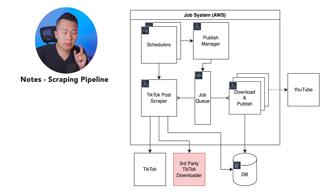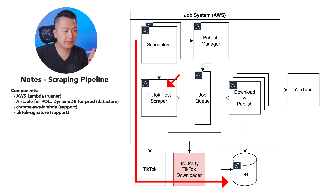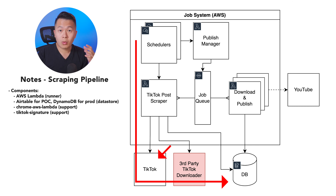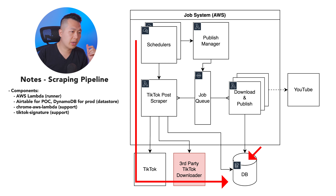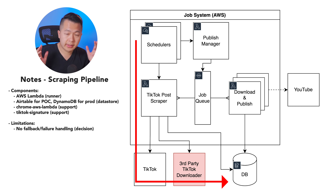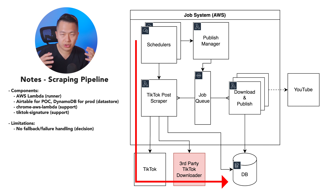Let's talk about the scraping pipeline. When the scheduler kicks off, the Lambda function starts up a headless browser, goes to TikTok, uses a signer validation method to create a signed URL, and uses that to grab the user's videos. Once it gets those videos, it normalizes and sanitizes the data and stores it into DynamoDB. It then goes to a third-party TikTok downloader website to get the download URL, saving that to the database too. There's no fallback mechanism if Lambda fails — we're consciously making that decision, because if it fails it'll just run again in 30 minutes, so there's no point over-engineering for failure cases in a POC.